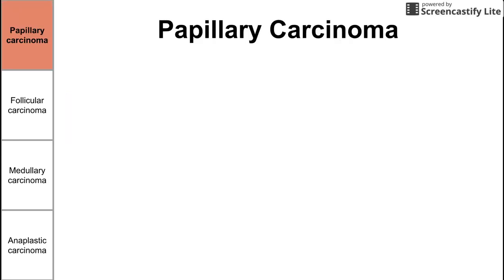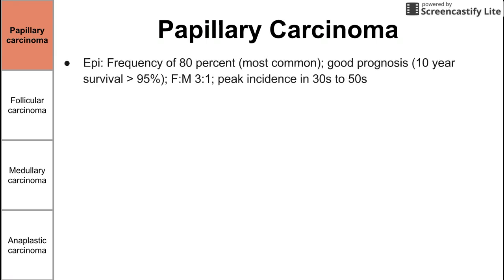Let's begin with papillary carcinoma. These four types are listed in increasing severity — increasing ability to metastasize and to spread. Papillary carcinoma has the best prognosis, with a frequency of about 80% of all thyroid cancers and a 10-year survival of about 95%. The female to male ratio is 3 to 1, with a peak incidence in the 30s to 50s years of age.